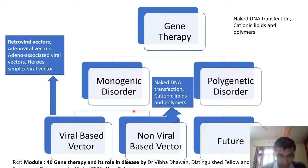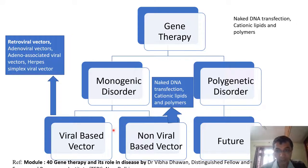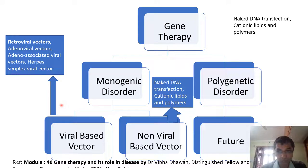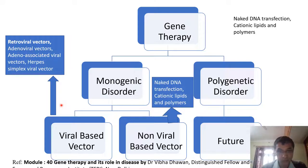However, the advantage of adenoviral vectors is that they can accommodate a large size of genome — up to 30 kilobase pairs. This is very important: they can deliver approximately 30 kilobase pairs of gene product, which is why adenoviruses are used as viral vectors for gene therapy.